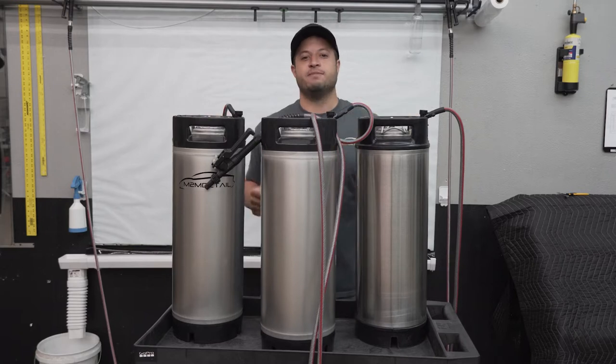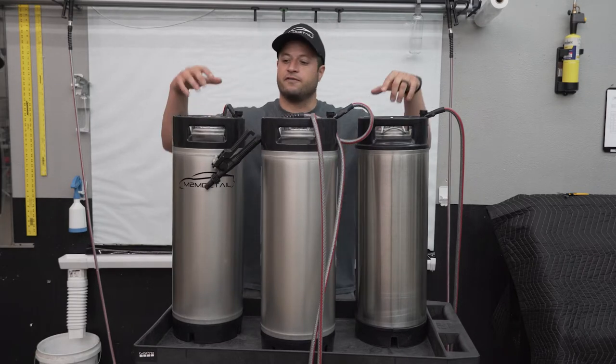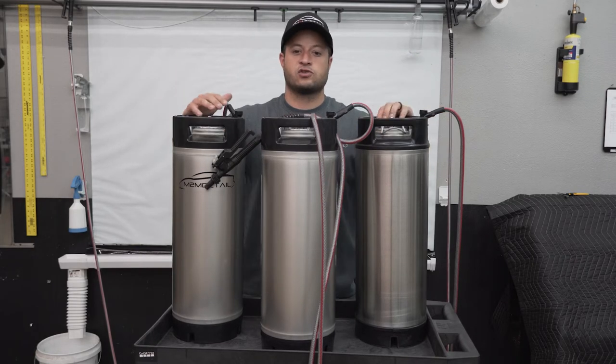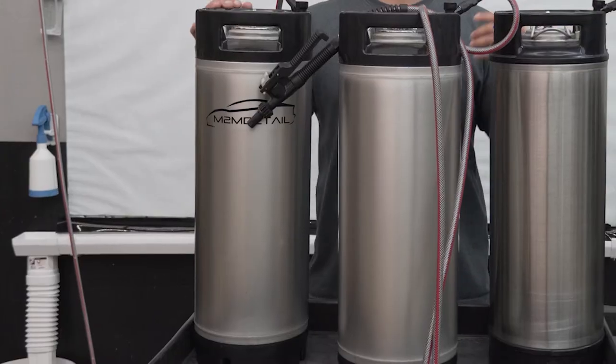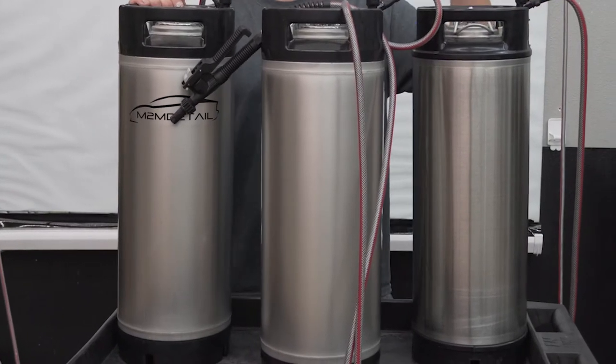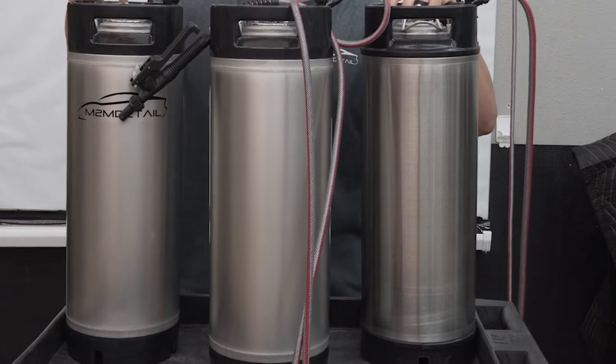What's up everyone, it's Mark here with M2M Detail. In this video I'm going over a 5-gallon keg pressurized sprayer. Very easy to use - you fill it up with four gallons of your slip solution or whatever you want, then just pump it up with an air compressor and you're good to go.